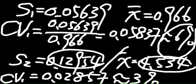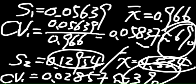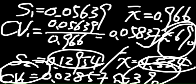If you compare 6% and 3%, of course, this one is more variable. That means the data is not consistent with each other, not at least not as consistent as this one. So CV2 is more consistent.